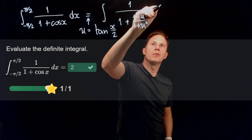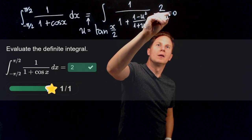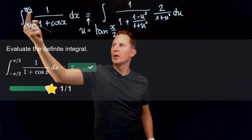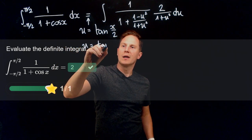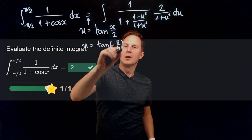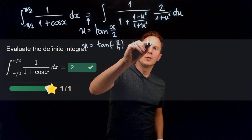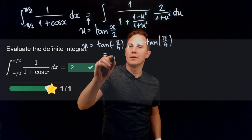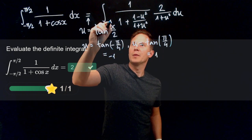whereas dx becomes 2/(1 + u²)du. As x ranges from -π/2 to π/2, u takes on the values tan(-π/4) and tan(π/4). These values are -1 and 1, so the integral goes from -1 to 1.